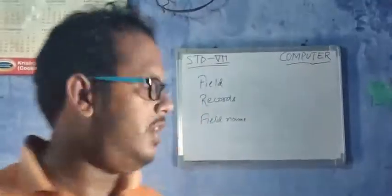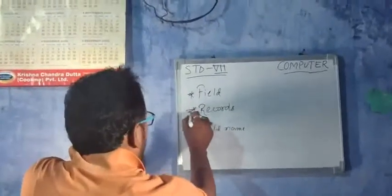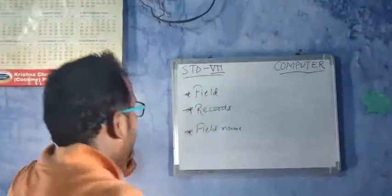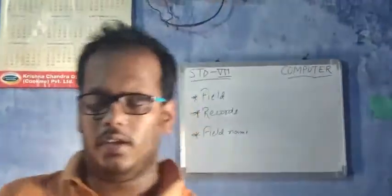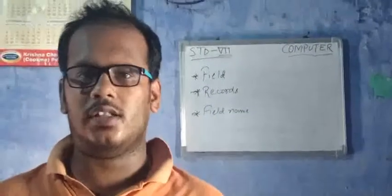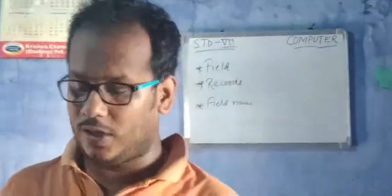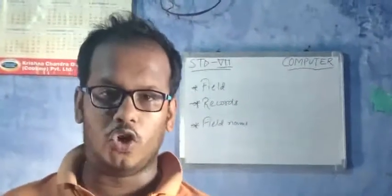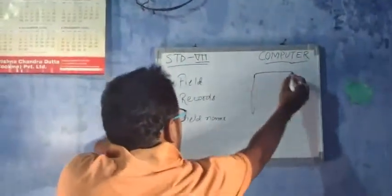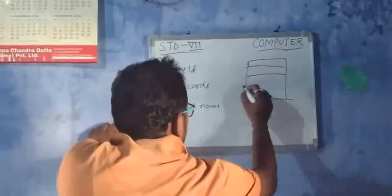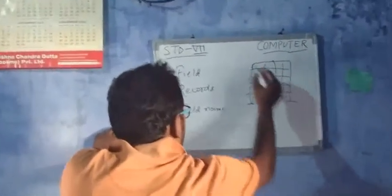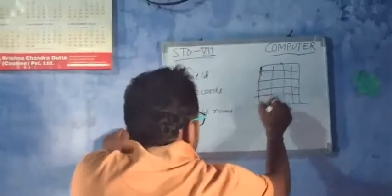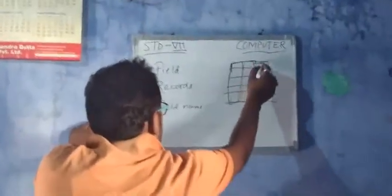Now we have three more terminologies: field, record, and field name. A field is basically a column. We know that databases consist of cells, and a cell is the intersection of rows and columns. When we talk about fields, each type of data in a record is stored in a column. So each specific column in the database is a field.